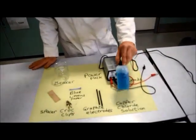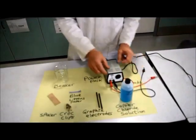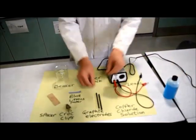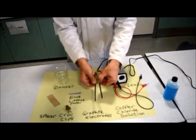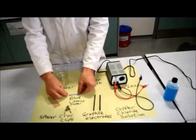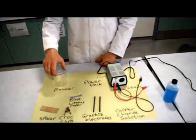This is the solution of copper chloride—it's a blue solution. We're going to need a power pack, two graphite electrodes and two crocodile clips, some blue litmus paper, a spacer, and a beaker.